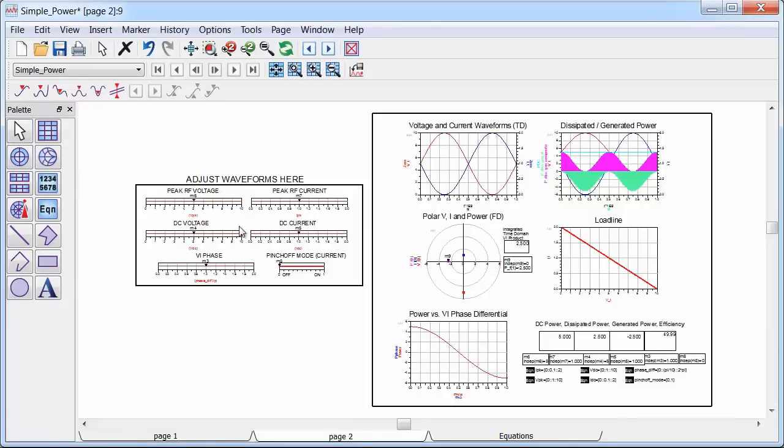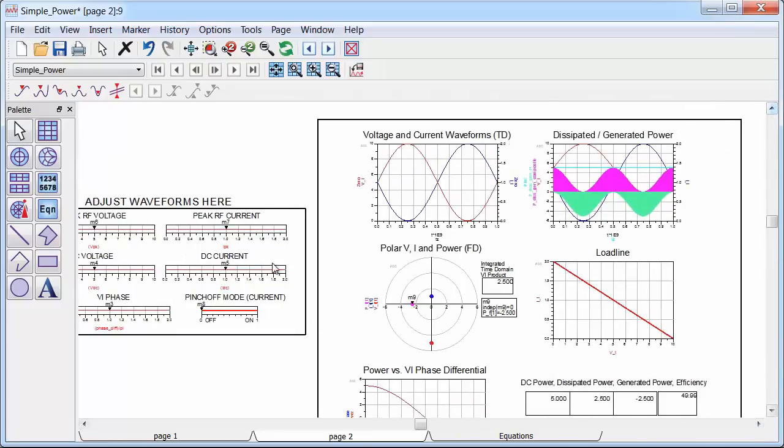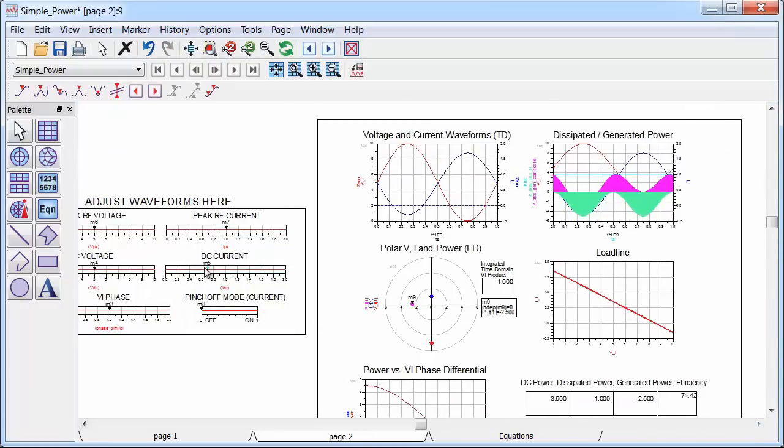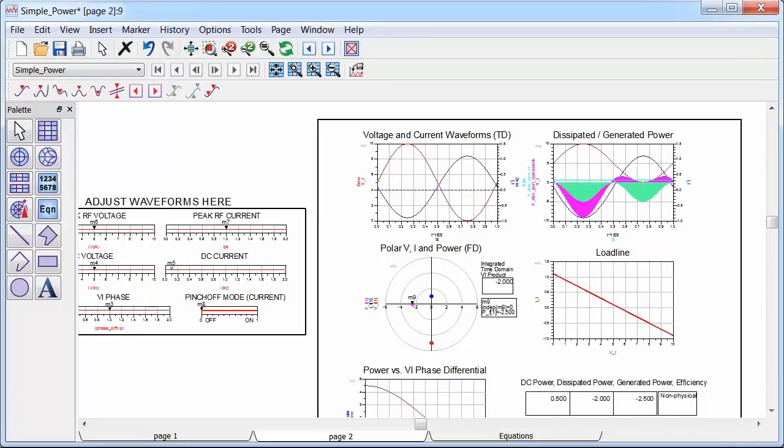So using the interactive waveform generator, which you can also download, it's possible to see what different types of waveform configurations will give you in terms of generated power, dissipated power, and efficiency. And it even tells you if a waveform is non-physical. In other words, it tells you if you have a waveform where the generated power exceeds the DC power, and this is a waveform that you can't actually build in the lab.